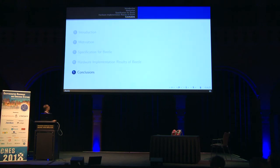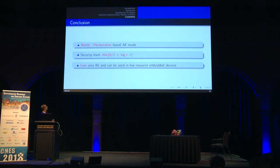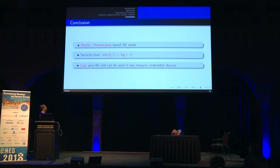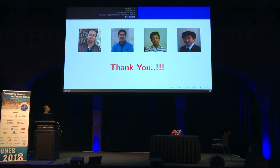In conclusion, Beetle is a permutation-based AE mode with a high security level of min(b/2, c − log r, r)-bit. It is a low-area authenticated encryption family that can be used very efficiently in low-resource embedded devices. Thank you.